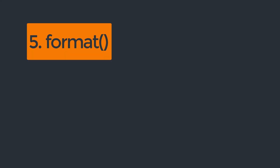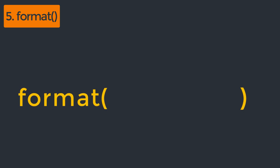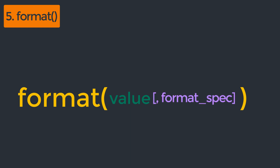Our next method is format. The built-in format method returns a formatted representation of the given value controlled by the format specifier. The format method is similar to the string format method. Internally, both methods call the __format__ method of an object. The built-in format method is a low-level implementation for formatting an object using __format__ internally, while string format is a higher-level implementation able to perform complex formatting operations on multiple object strings. The syntax is simply format, then we pass the value and the format specification. The format method takes two parameters: the value that needs to be formatted, and the format spec — the specification on how the value should be formatted.